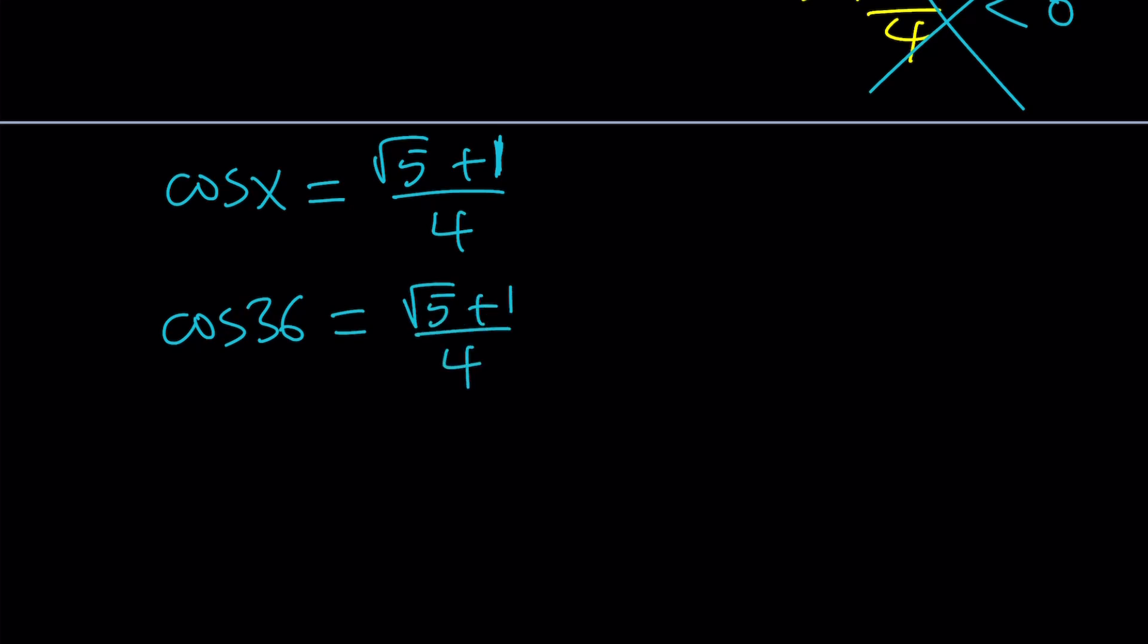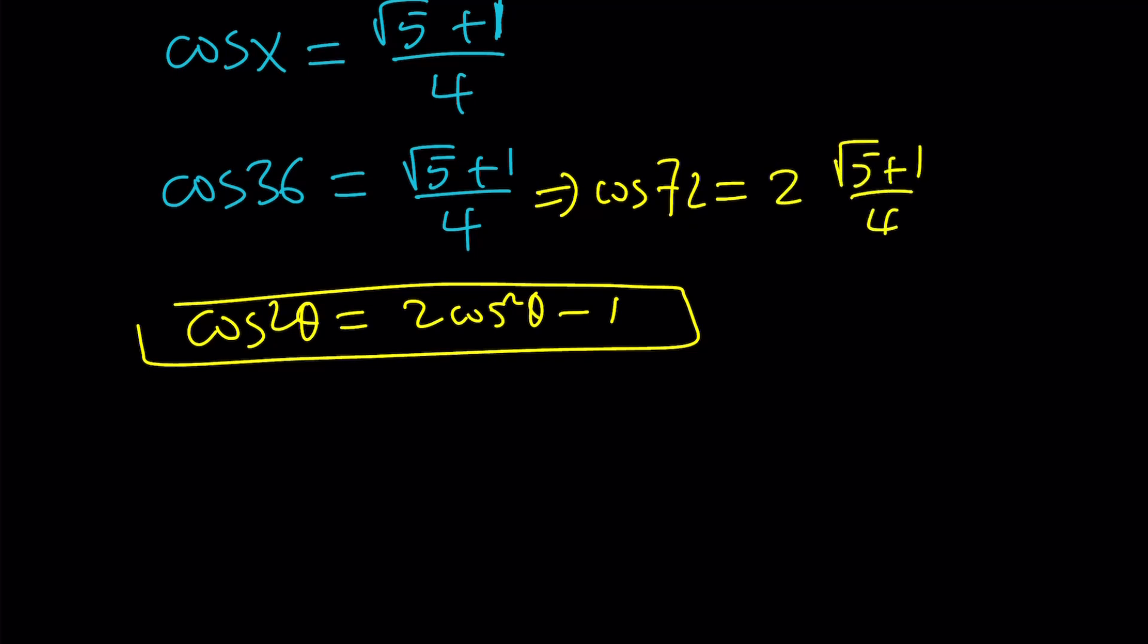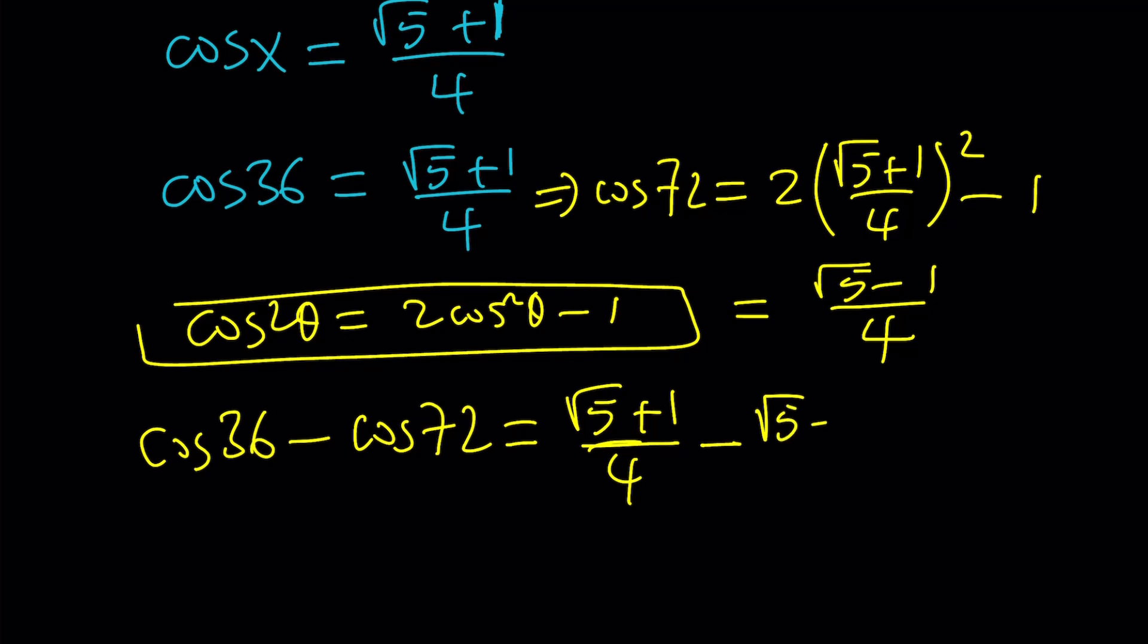Now I'm going to use the double angle formula. Cosine of 2 theta is 2 cosine squared theta minus 1. From here, cosine of 72 degrees is 2 times cosine of 36 squared and then minus 1. If you do the math, you get (√5 - 1) / 4. Cosine 36 and cosine 72 are conjugates. So cosine 36 minus cosine 72 is (√5 + 1) / 4 minus (√5 - 1) / 4. Root 5 cancels out, 1 minus minus 1 is 2, divided by 4 is 1 half. That brings us to the end of the first method.